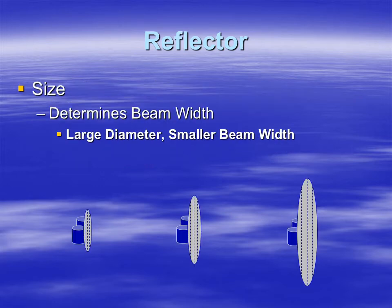Beam width is determined by the antenna size — larger antennas or larger dishes means smaller beam widths.